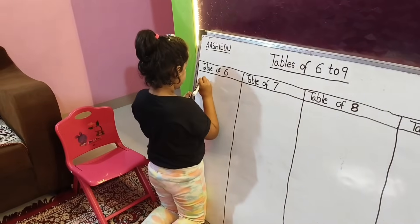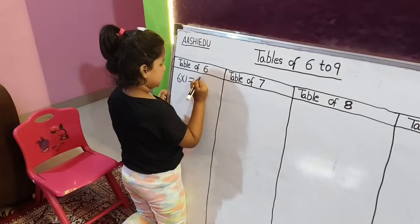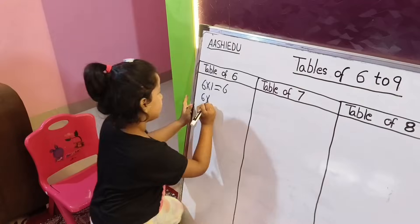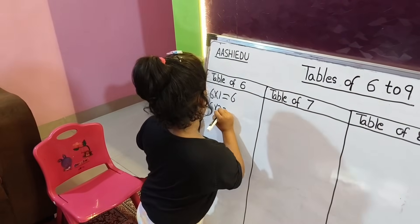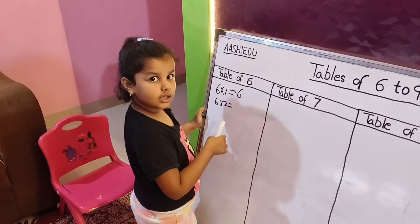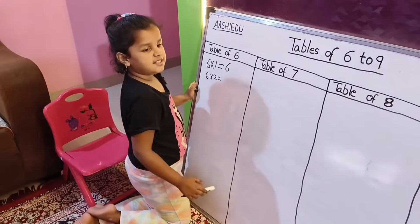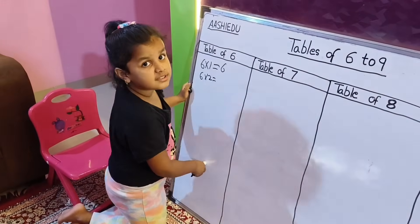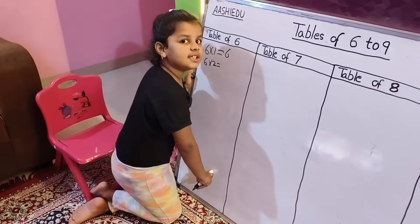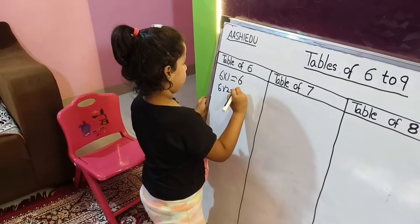Table of six. Six multiply one equal six. Six multiply two... six, six, six. Six multiply... thirty-six. Six, twelve, one.